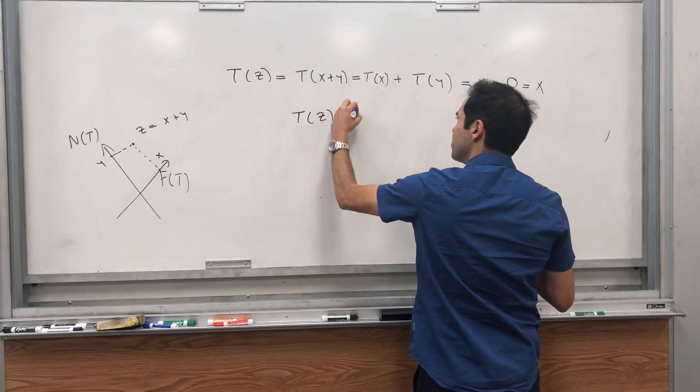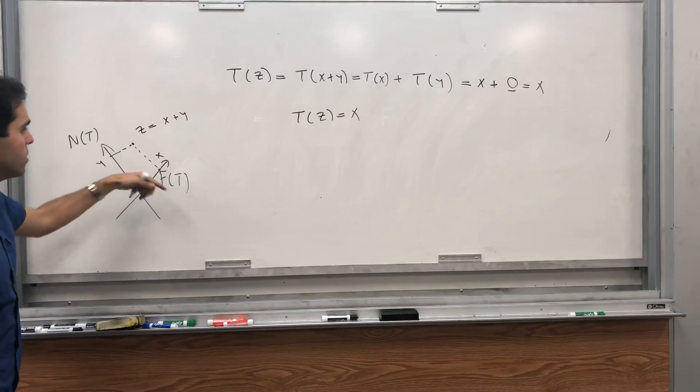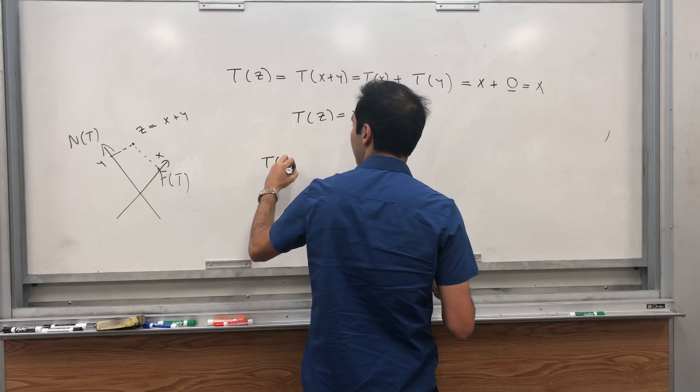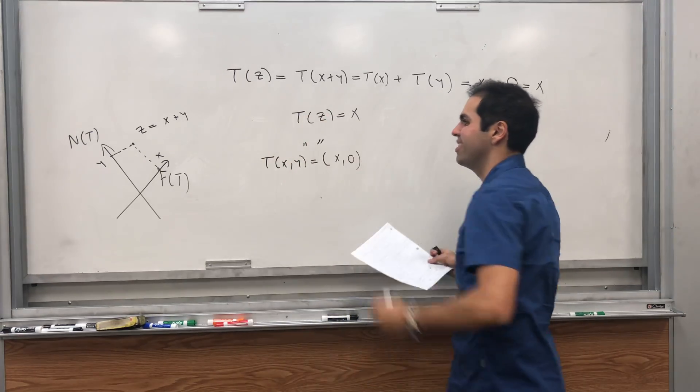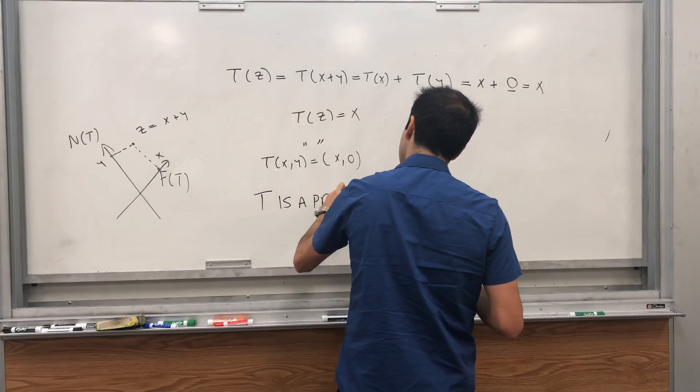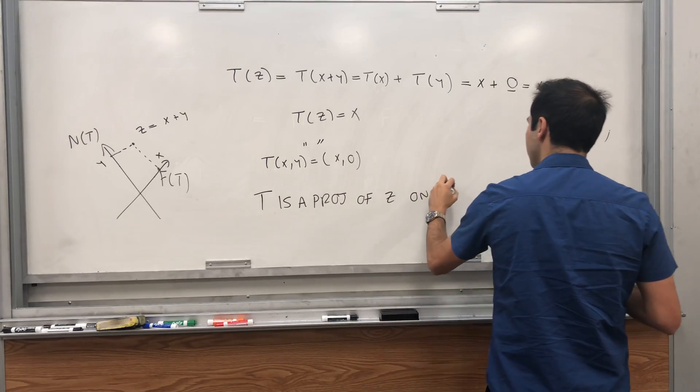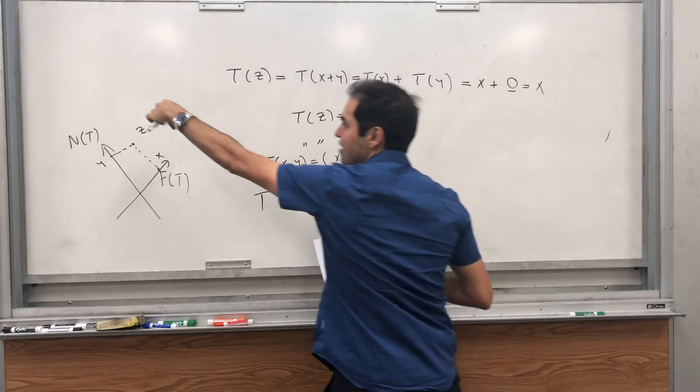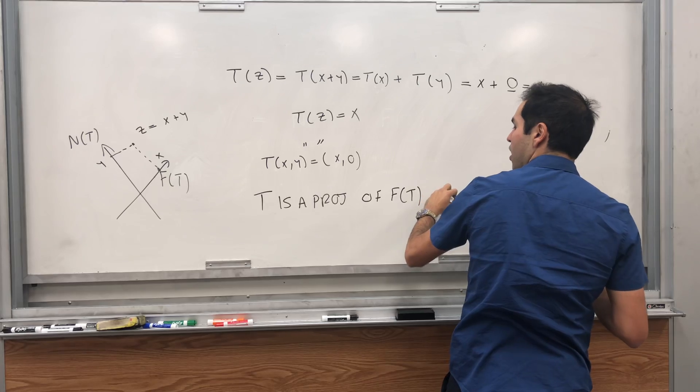So T(z) equals x. So what does T do? It takes this arbitrary vector z and just squishes it on this fixed point space. So T, in order to think of it as follows. So it's sort of T(x, y) is just x comma zero in some sense. So it is a projection. So indeed, T is a projection of z if you want, on F(T). It's a projection on F(T) along this null space. So in the direction of this null space vector of F(T) on N(T).